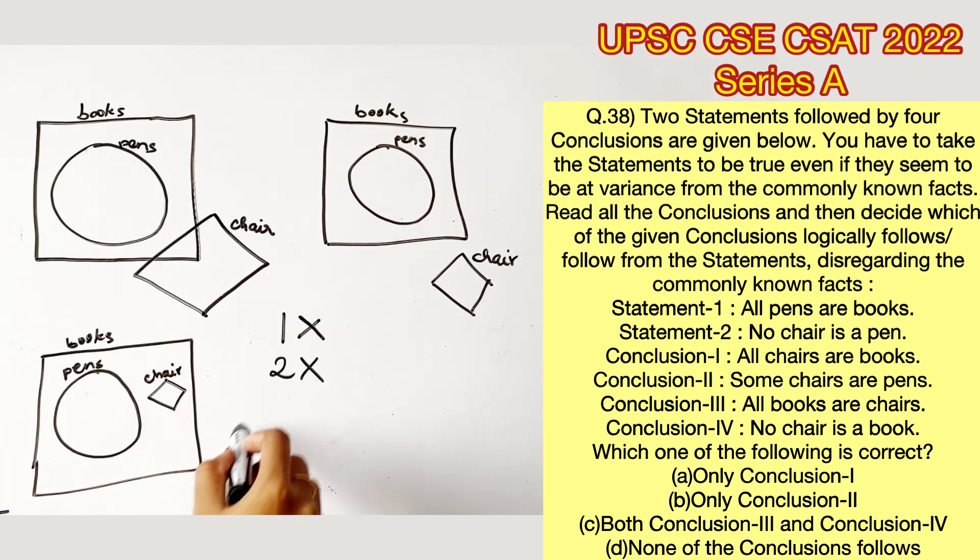Conclusion 3 says all books are chairs. This also is not true in any of these cases, so the third conclusion is also wrong.